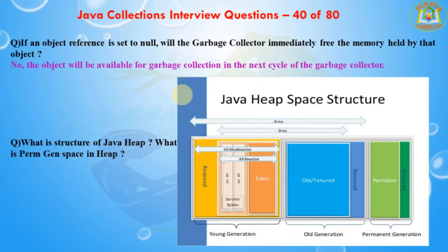The next question is: if an object reference is set to null, will the garbage collector immediately free the memory held by that object? No, the object will be available for the garbage collector in the next cycle of the garbage collector.